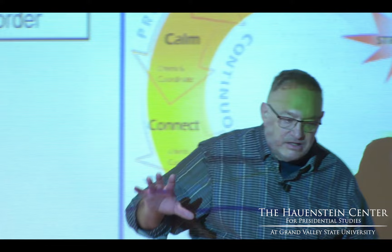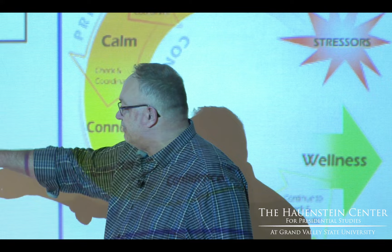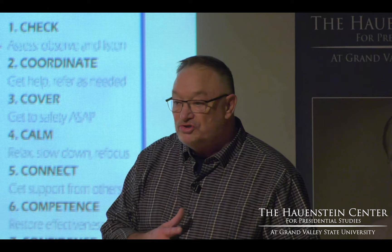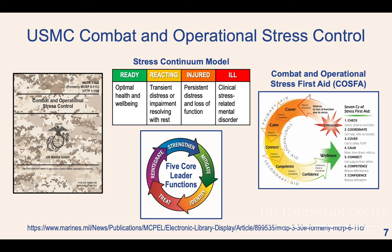The leadership's job in this model consists of five functions: Strengthen, Mitigate, Identify, Treat, and Reintegrate. Strengthen means enhance protective factors. Mitigate means reduce risk factors. Identify means recognize when somebody is in the orange zone and needs stress first aid. Treat means apply stress first aid and refer for clinical care if indicated. Reintegrate means help them get back to being a functioning member or help them have a good transition.